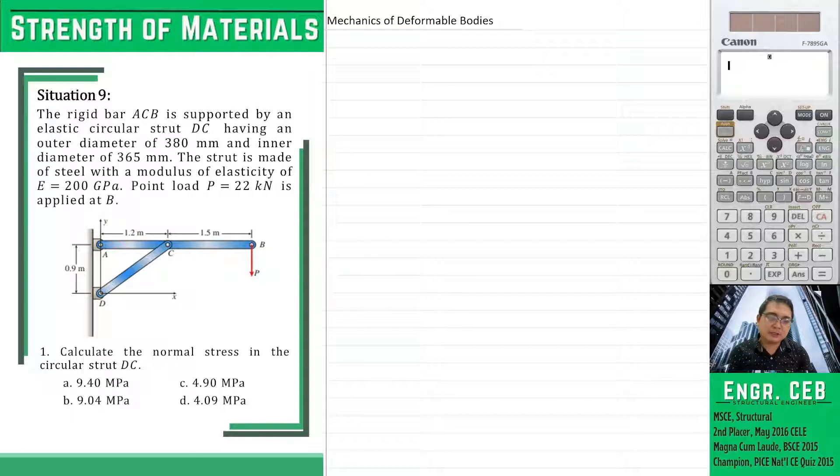So for the first question, calculate the normal stress in the circular strut BC. So first, we have to provide the free body diagram for each bar, ACB and CD.